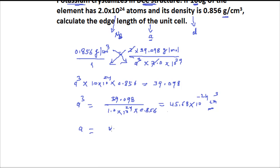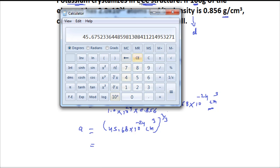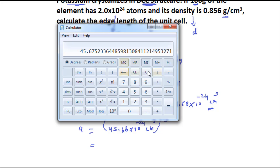And from this we can get A value. A is equal to, here we get 45.68 multiplied by 10 to power minus 24 and it is centimeter cube. And here we get 1 upon 3. Now we can take cube root of this.